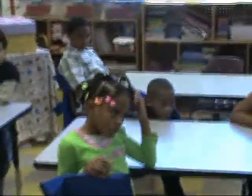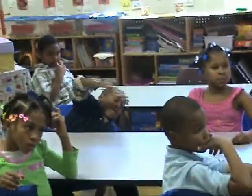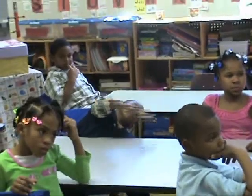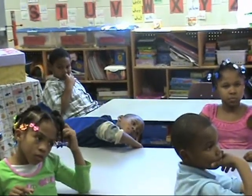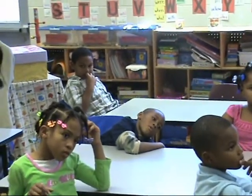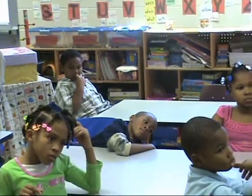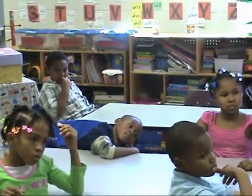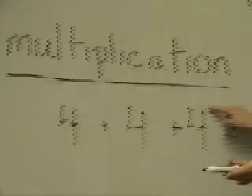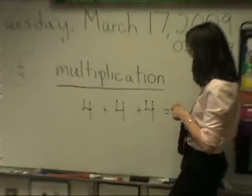Can anyone tell me what three numbers I might be able to use that are equal groups? Kyrese, tell me three numbers that are equal. Four plus four plus four. Very good, Kyrese. Four plus four plus four — ten, eleven, twelve.